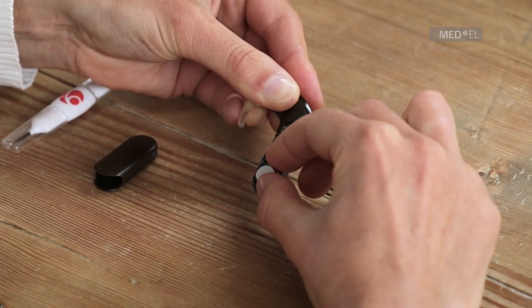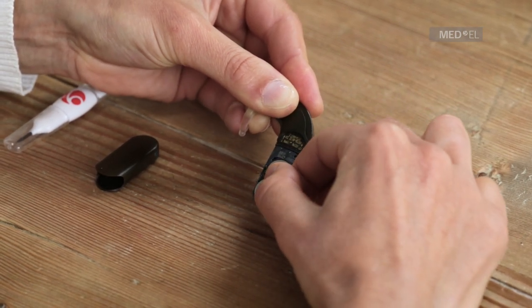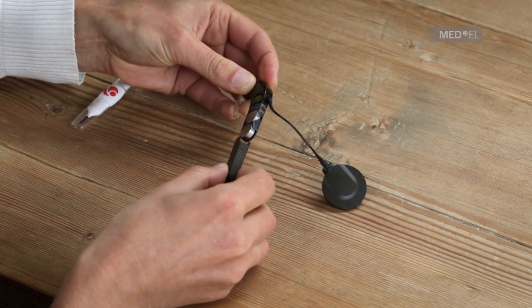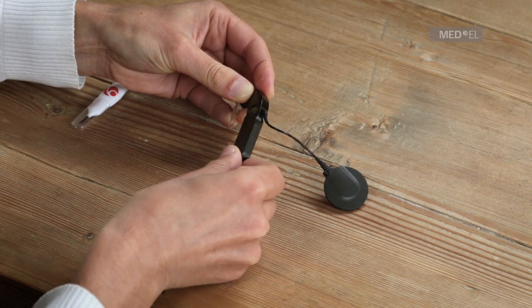The air inlets on the battery pack cover should be on the same side as the coil cable socket of the control unit. To turn on Sonnet, fully close the battery pack cover.